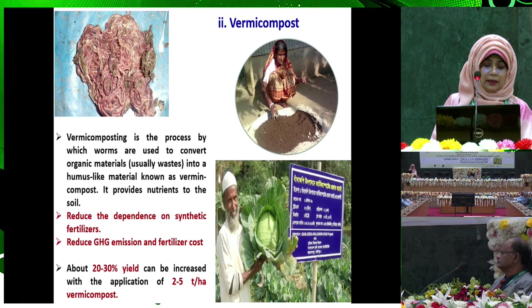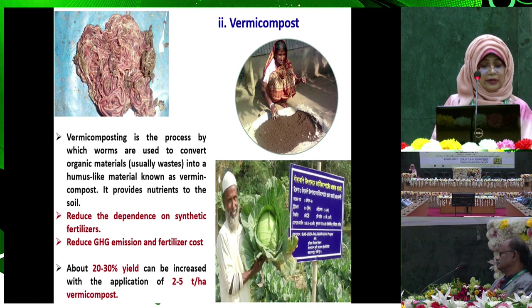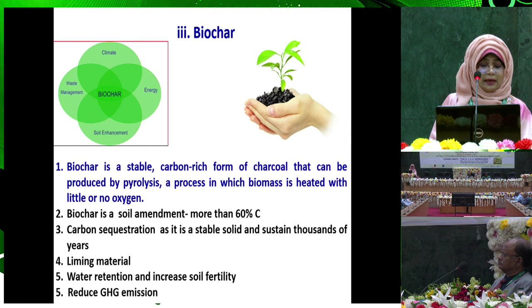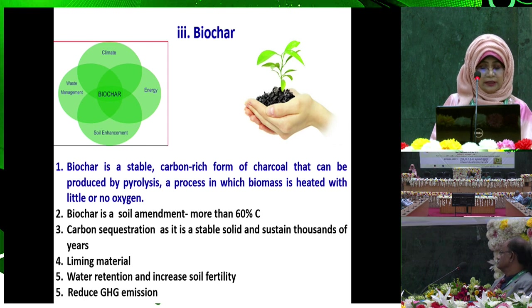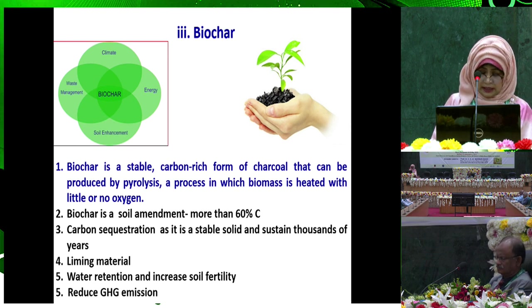Vermicompost is the process by which worms convert organic materials — usually waste — into a humus-like material. It provides nutrients to the soil, reduces the dependence on synthetic fertilization, and reduces GHG emission and fertilizer cost. Biochar is a stable carbon-rich form of charcoal produced by pyrolysis, heating biomass with little or no oxygen. It is a soil amendment with more than 60% carbon, providing carbon sequestration as a stable solid that persists for thousands of years. It also acts as a liming material and reduces GHG emission.